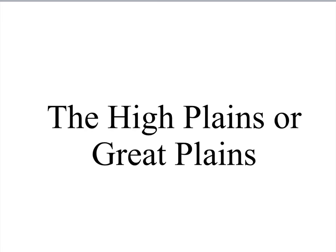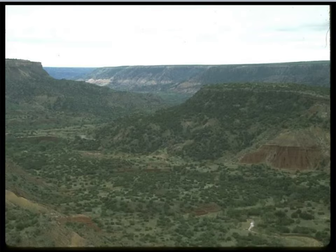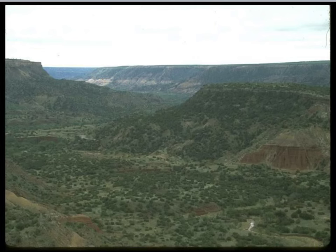Remember, plains are flat lands. In the southernmost part of the High Plains region is called the Edwards Plateau. Like any other plateau, part of the land of the Edwards Plateau is high and flat like a table. The southern and eastern parts of the Edwards Plateau, however, have many hills. In fact, this land west of Austin is so hilly that it is often called the Hill Country.